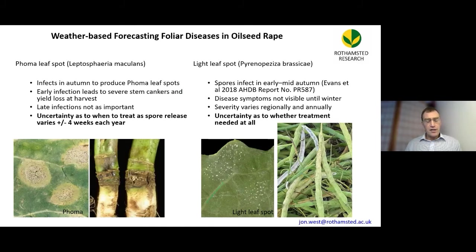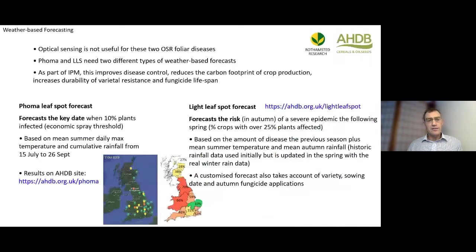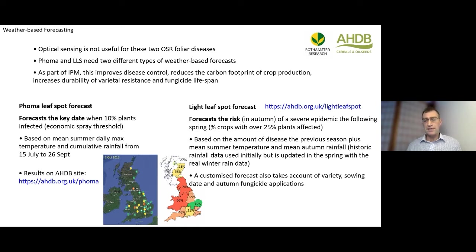For many years, colleagues and I have put out forecasts for two important diseases of oilseed rape: phoma stem canker and light leaf spot. These are quite different — for phoma, the key thing is working out when to spray, whereas for light leaf spot the key thing is understanding whether to spray at all, based on expected disease pressure.